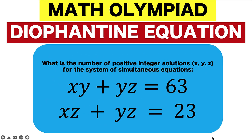Hi guys, here is our math problem for today. We are given here a Diophantine equation. What is the number of positive integer solutions x, y, z for the system of simultaneous equations below? We have xy plus yz equals 63 and xz plus yz equals 23.